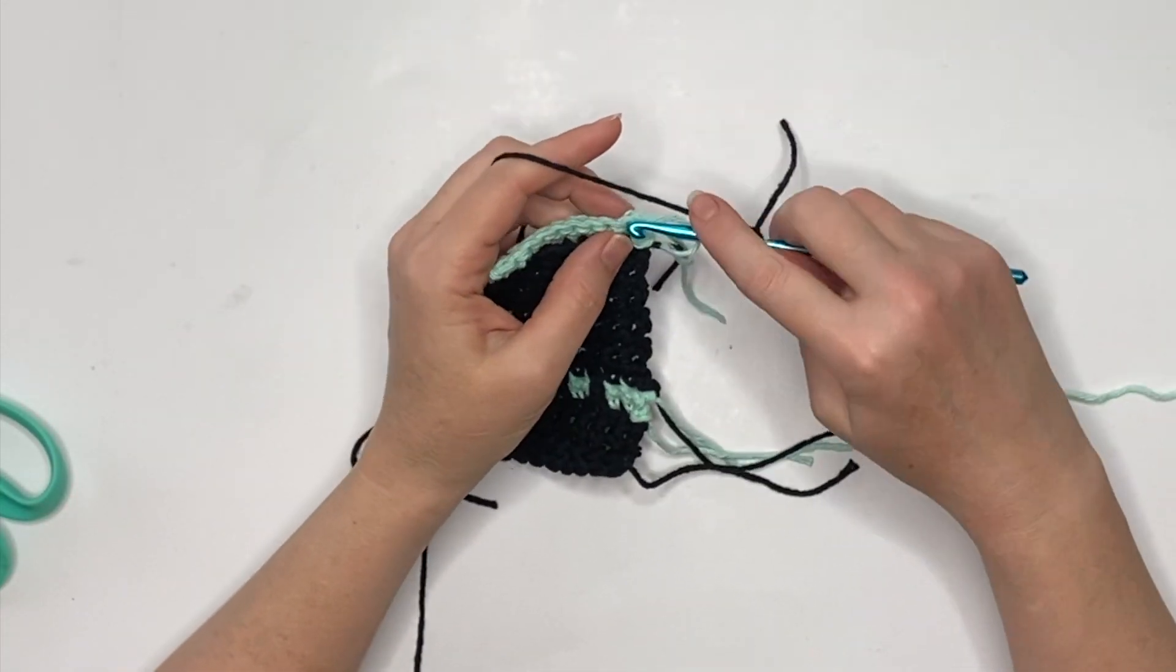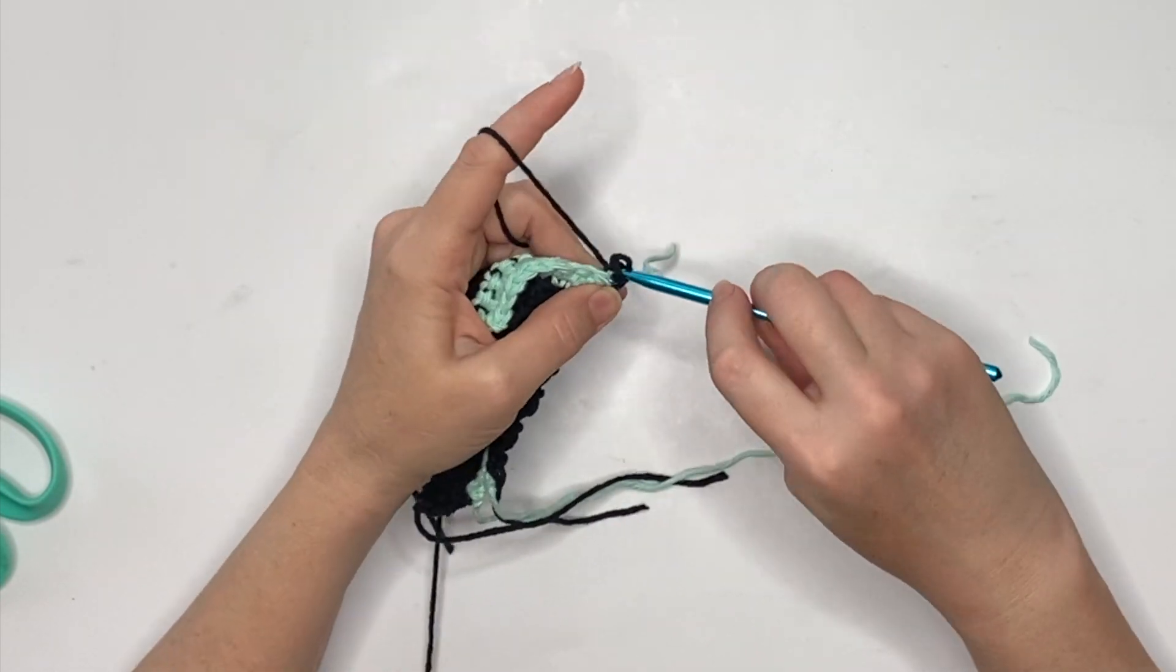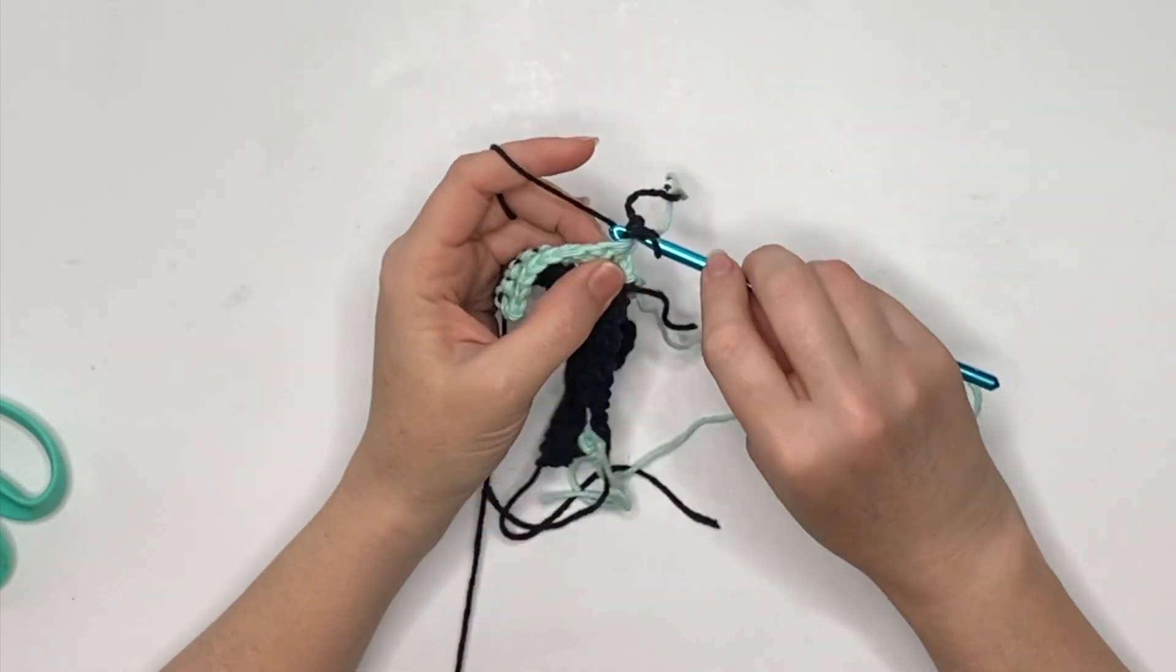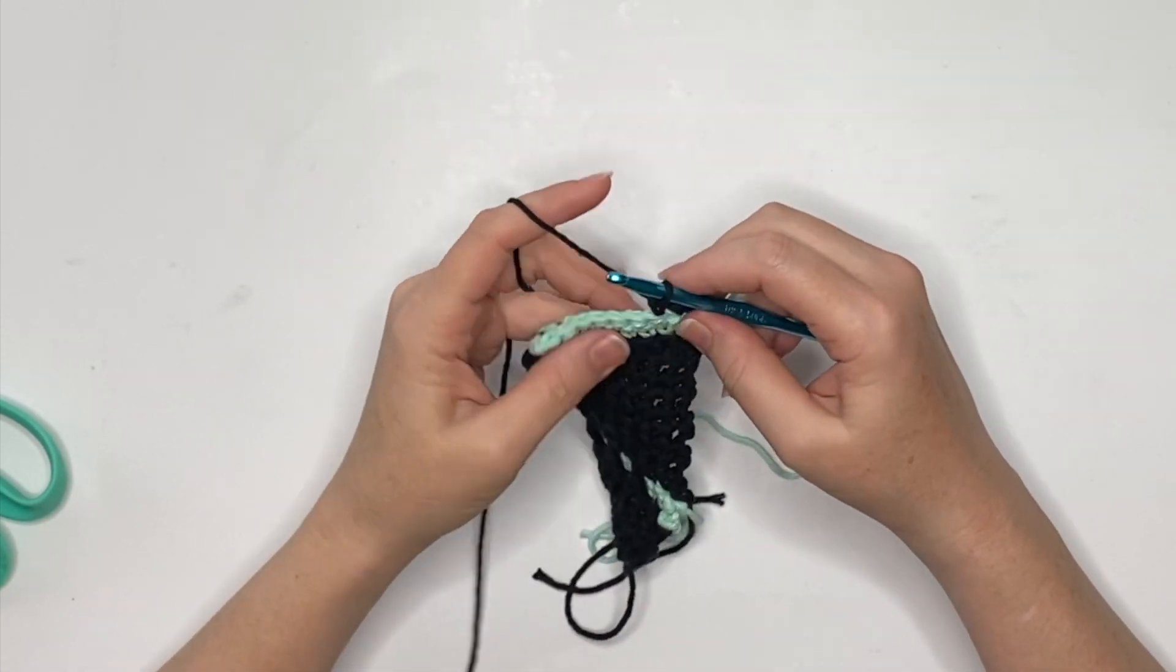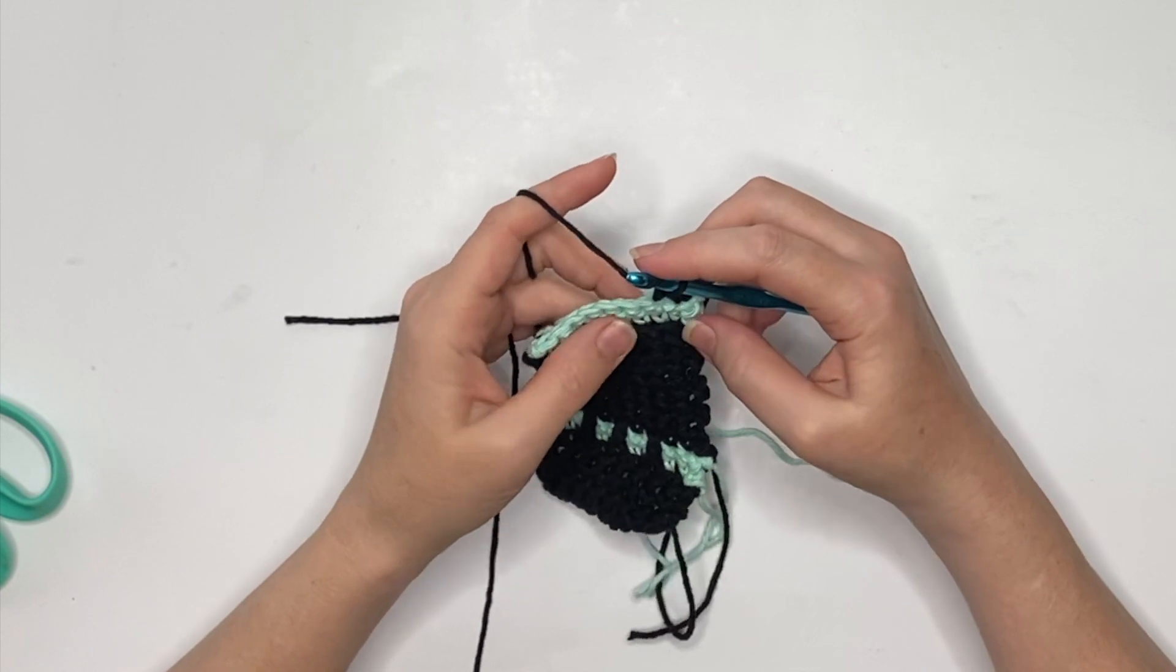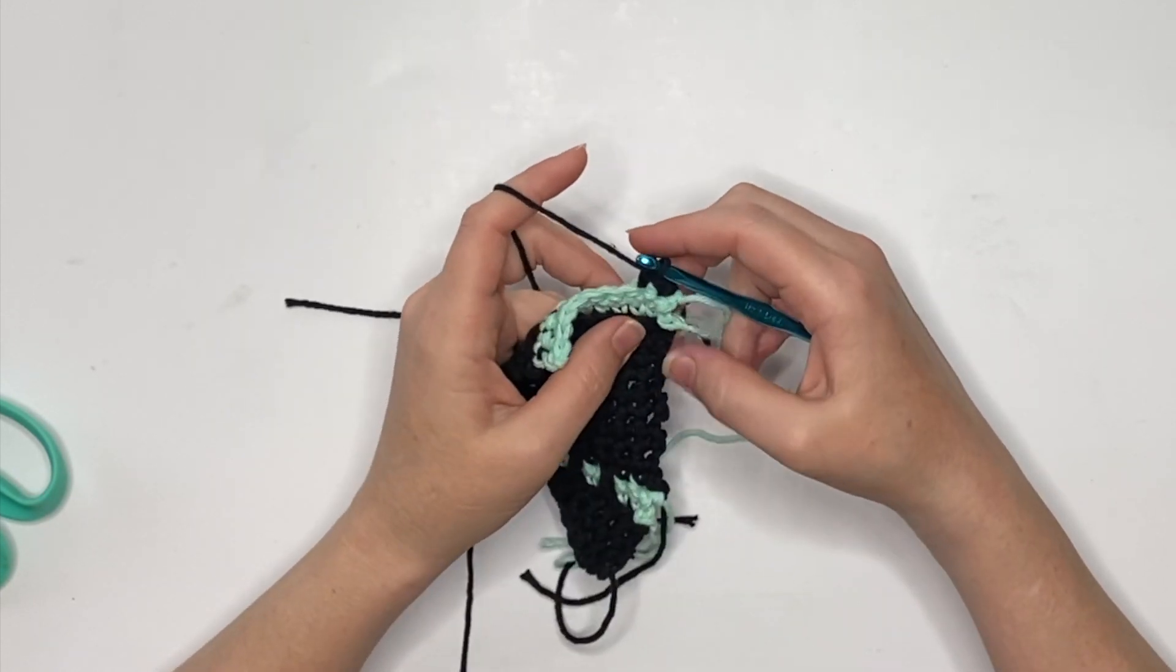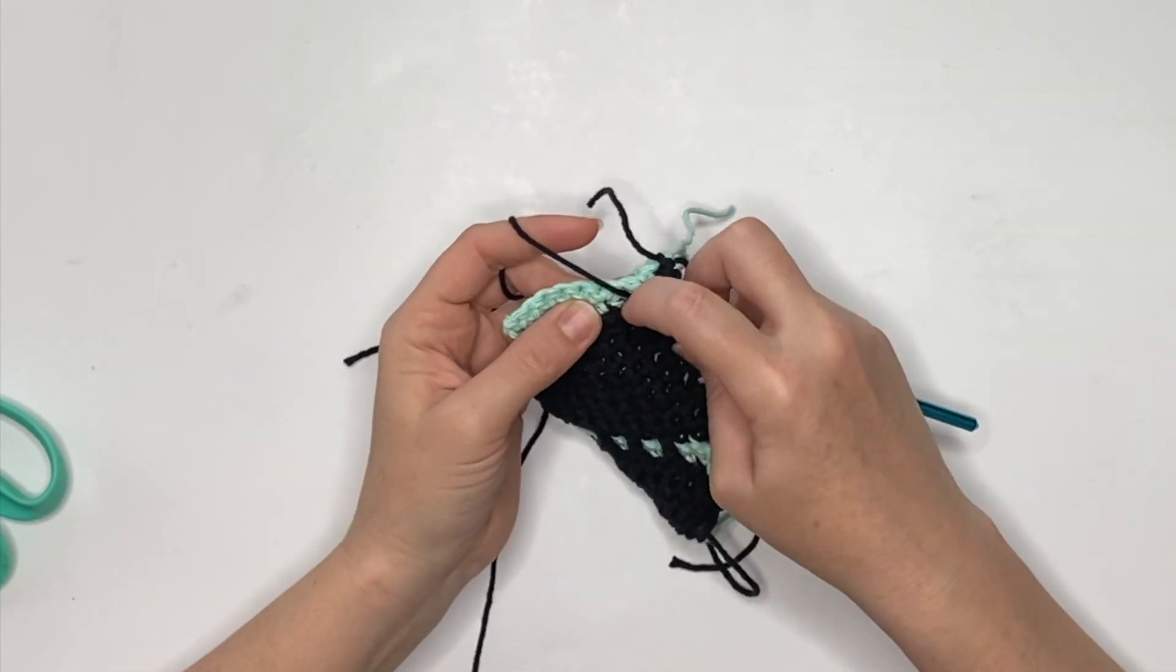Now we're switching back to our color A again, repeating what we did above. You're going to chain one, single crochet two, and then do the treble crochet front loop only all the way down to the black. Wrap it over, yarn over, and then go all the way down to make our pattern pop.